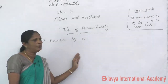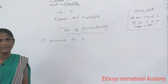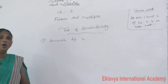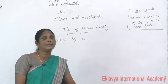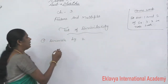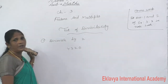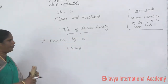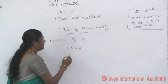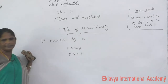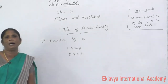For example, 4320 — 0 comes in the 1's place, therefore this number is divisible by 2. Then 5328 — 8 comes in the 1's place, therefore this number is divisible by 2.